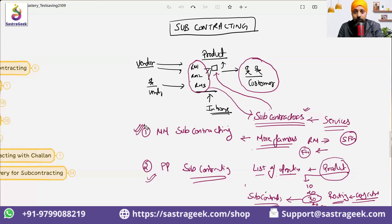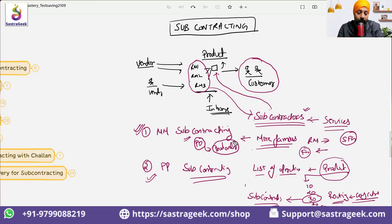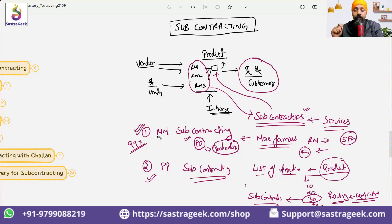In MM subcontracting, we have a purchase requisition and purchase orders. The behavior of the purchase order in subcontracting is a little bit similar to the production order, because the Bill of Materials comes into the picture. MM subcontracting is more famous because the visibility is there. Wherever I have worked, 99% of cases I have seen MM subcontracting. The basic difference: in MM subcontracting we subcontract the full product; in PP subcontracting we subcontract particular operations within the product.